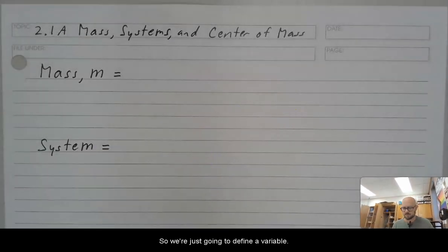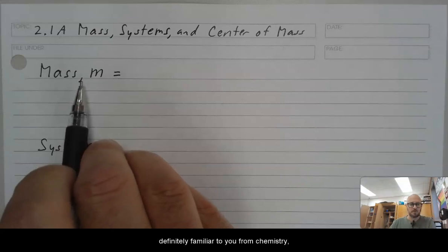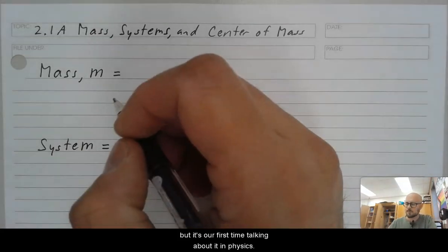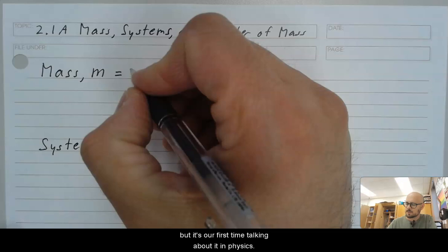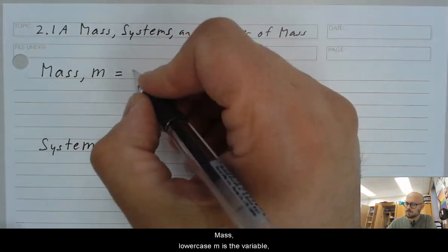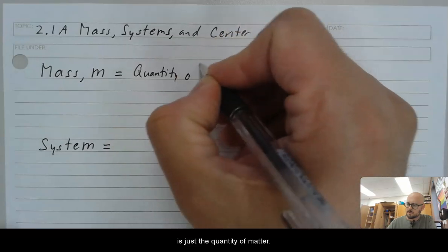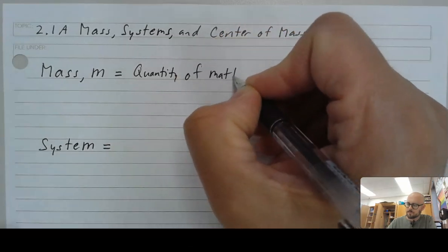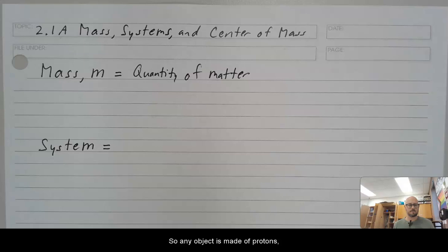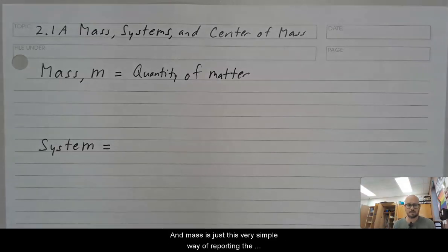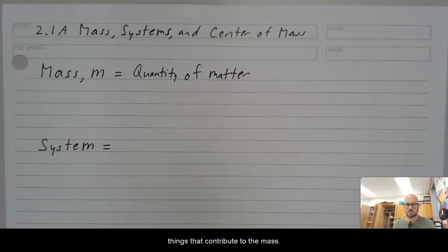So we're just going to define a variable now. Mass is something that is definitely familiar to you from chemistry, but it's our first time talking about it in physics. Mass, lowercase m is the variable, is just the quantity of matter. So any object is made of protons, neutrons, and electrons, and mass is just this very simple way of reporting the total mass of all of that stuff, the total amount of those things that contribute to the mass.